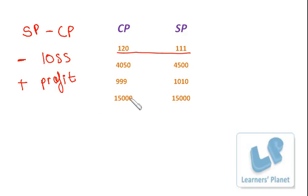So, in the first sum, we'll subtract CP from SP. So, that is 111 minus 120. You'll get minus 9. So, this one is a loss.